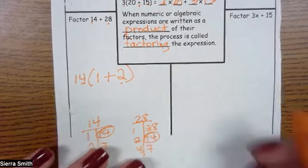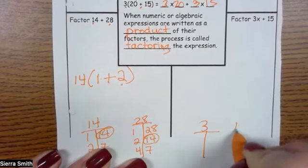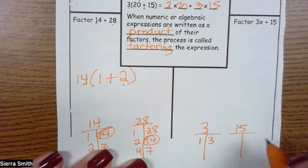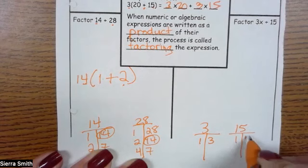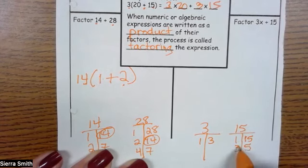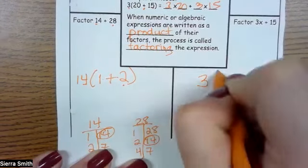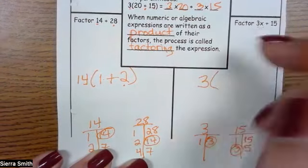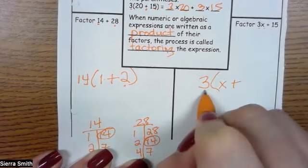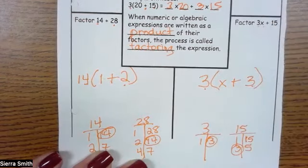Factor 3x plus 15. I need to find my factors of 3 and my factors of 15. Factors of 3 are 1 and 3. Factors of 15 would be 1 and 15, 3 and 5, which gives me the greatest common factor of 3. So I can pull 3 out of that problem. 3 times what gives me 3x? That would be x. Bring down the same sign. 3 times what would give me 15? That would be 5. And you're done.